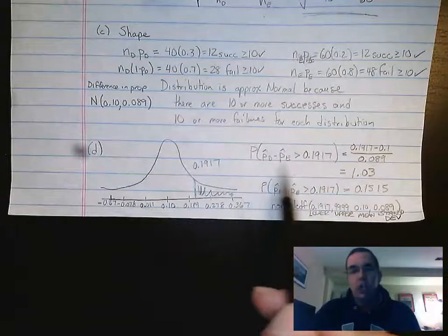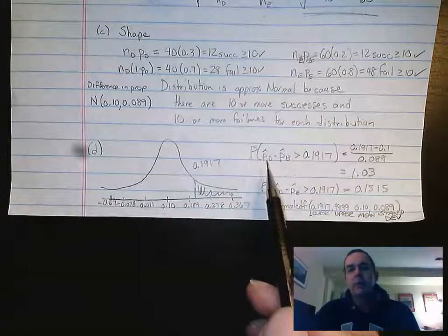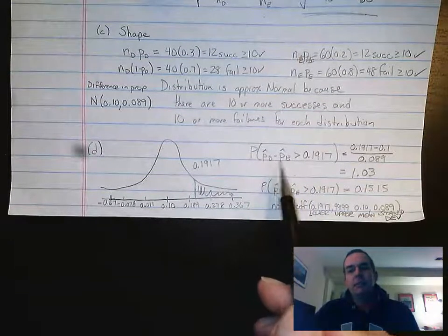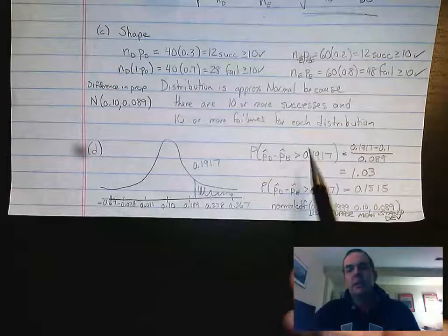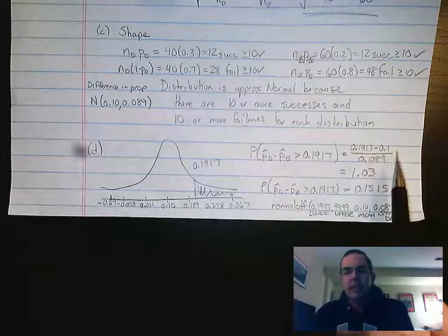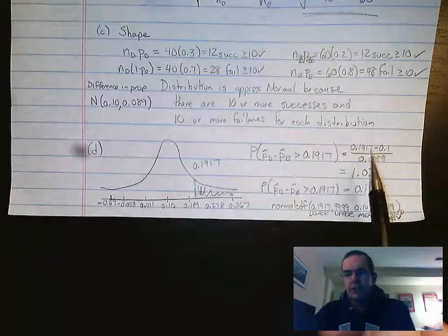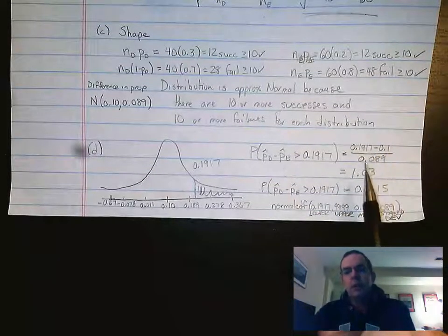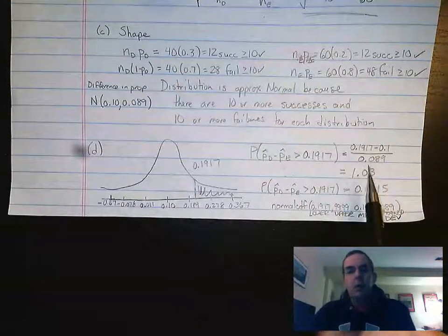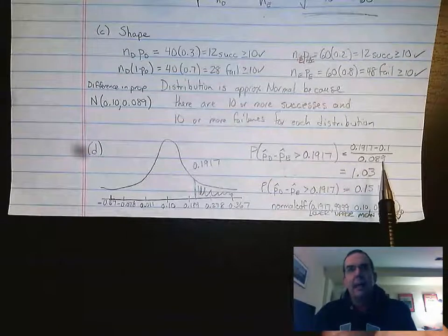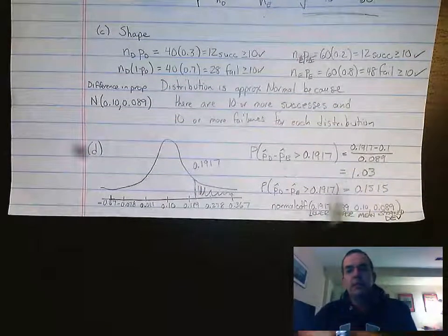Then I'm going to speak good statistics. The probability of that difference of samples, P hat D minus P hat E, being greater than 0.1917. Mr. Micah's students did this with z-scores. I wanted to show the z-score you get, and then you can use the table to access the actual probability.